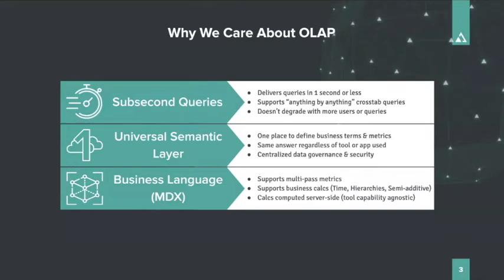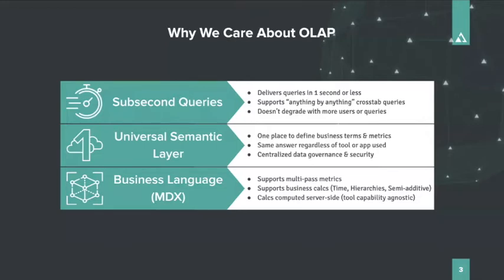We're going to cover why OLAP works and is so important in a cloud environment, why people still use Excel, and then I'll show you how we make it work together using real live data in Google BigQuery. Why do we care about OLAP? I always think of OLAP as delivering three capabilities. The first is query speed — and we're not talking 10, 20, or 30 seconds per query. That's not OLAP speed. OLAP speed needs to be one second or less, what we call speed of thought, which supports true data exploration where you can literally do anything by anything. That's not possible with just SQL on cloud tools like BigQuery, where minimum latency is two to three seconds at best, and most BI-style queries take 10 seconds or more.